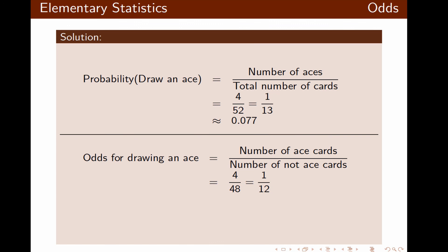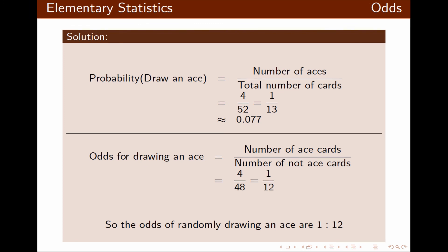The odds for randomly drawing an ace are the number of ace cards divided by the number of non-ace cards. There are 4 aces in the numerator and 48 non-ace cards in the denominator, which reduces to 1 over 12. So the odds of randomly drawing an ace are 1 colon 12. This presentation helps illustrate the difference between probability and odds — even though they are related, they do not represent the same thing.